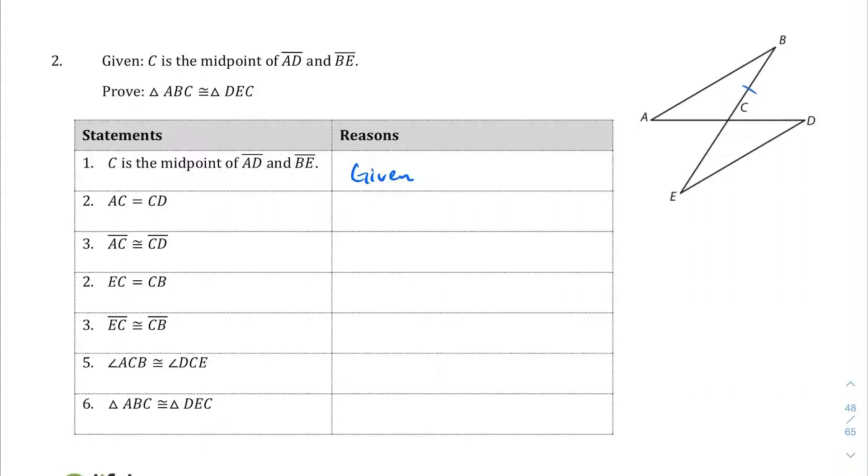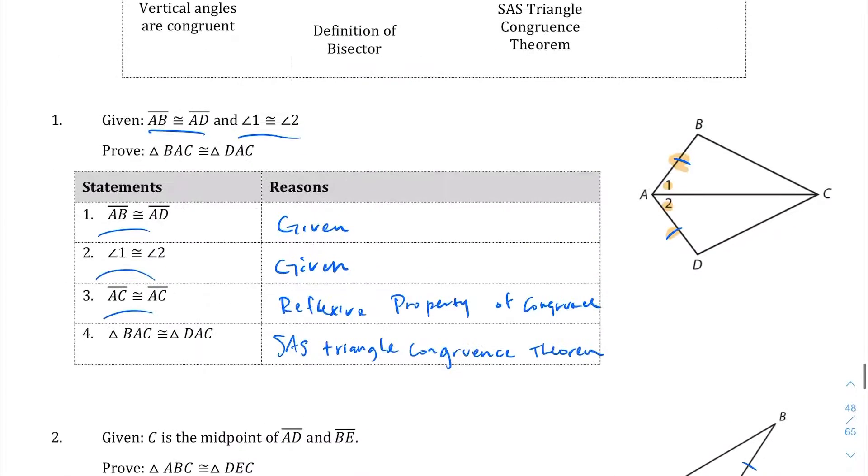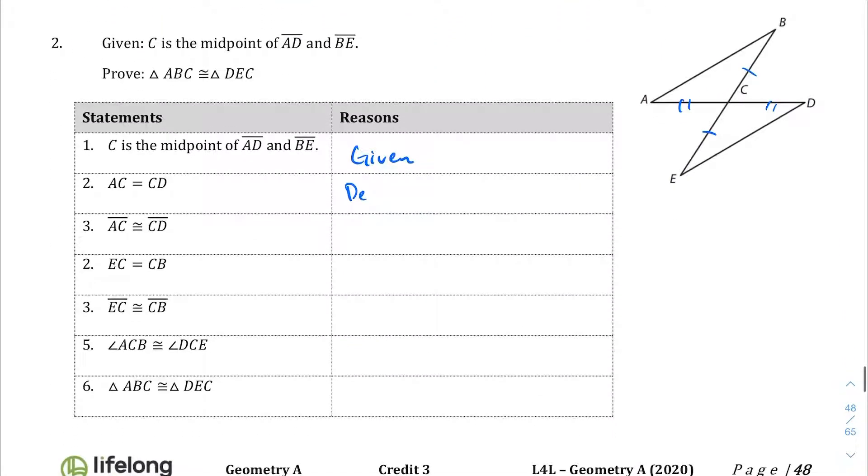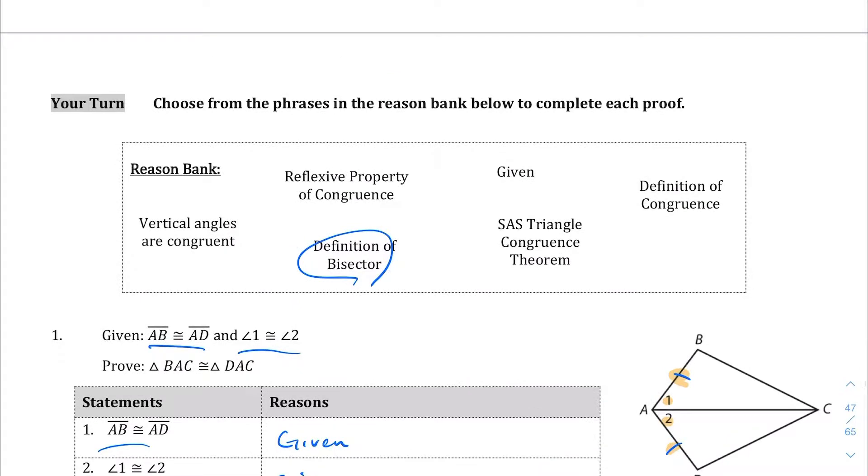And this is a midpoint. So what that means is this is going to be equal to this and this is going to be equal to this. So AC being equal to CD is going to be the definition of a bisector. I think that's one of our choices here. It is definition of bisector. Definition of bisector.